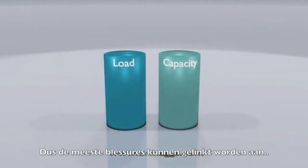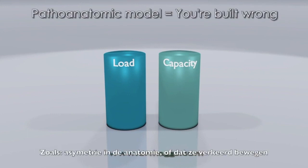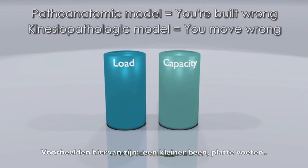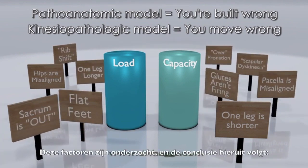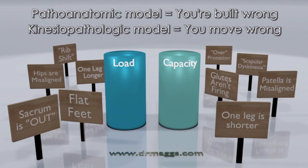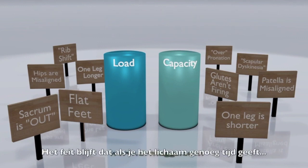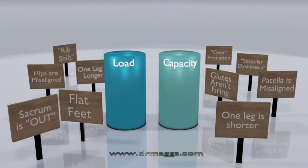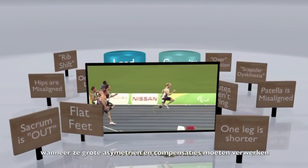Most injuries can be attributed to this load-capacity relationship. Unfortunately, many people are told that their pain is due to biomechanical abnormalities such as asymmetries in their anatomy or that they just move wrong — examples include a short leg, flat feet, glutes not activating, or the sacrum being out of place. These factors have been researched and the conclusions are that many simply don't even exist, and of those that do, they play a small if any role in pain or injury. If you give the body enough time to adapt, injury and pain are unlikely even when we're not built or moving perfectly. If you've ever watched the Paralympics, you quickly realize that humans are capable of performing at extremely high levels while possessing massive asymmetries and compensations.